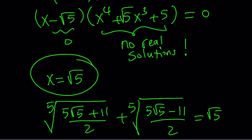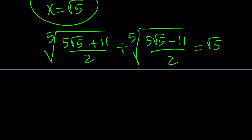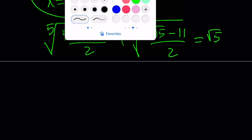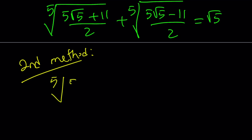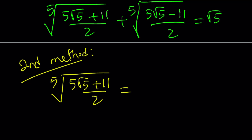Now why did I say this might be called a golden problem? We need to do the second method first to see why. The second method is interesting because it deals with one of these radicals first. I'm assuming that the fifth root of this radical is going to look like a√5 + b.